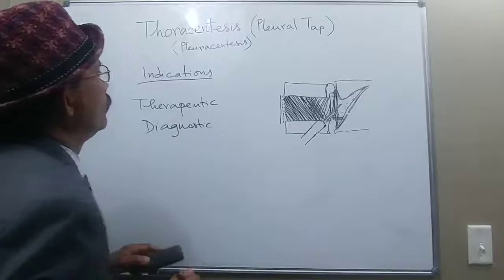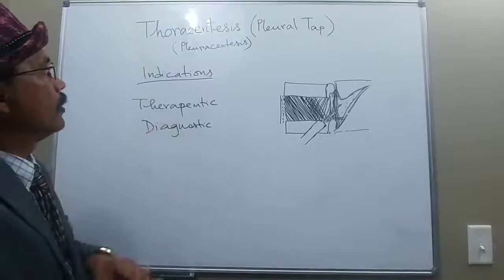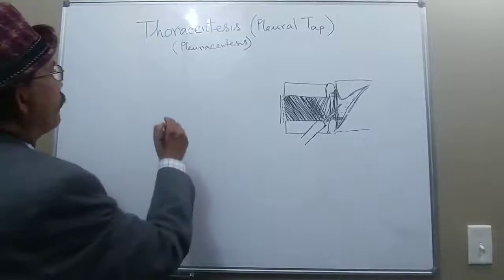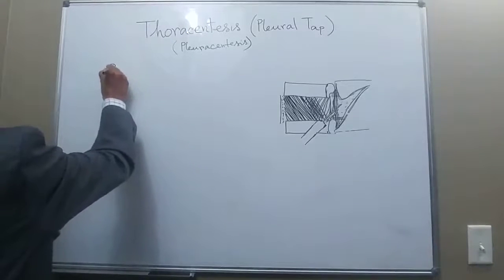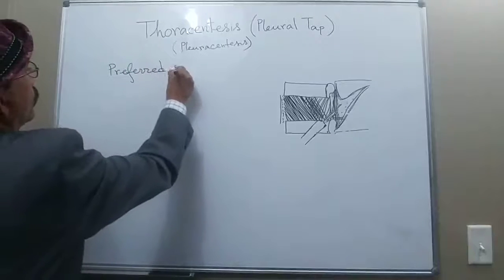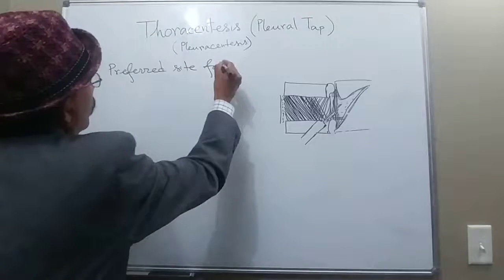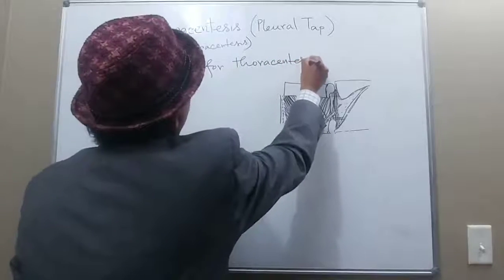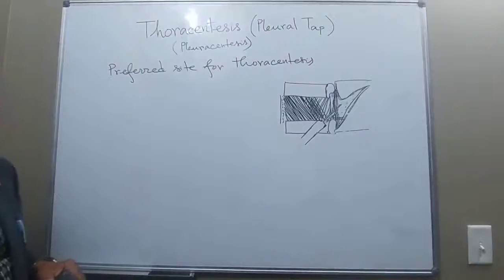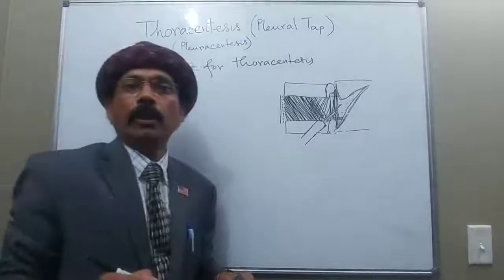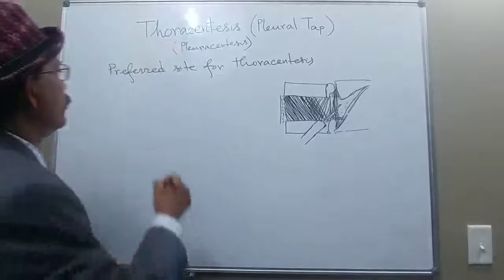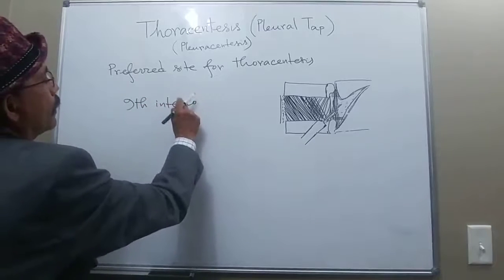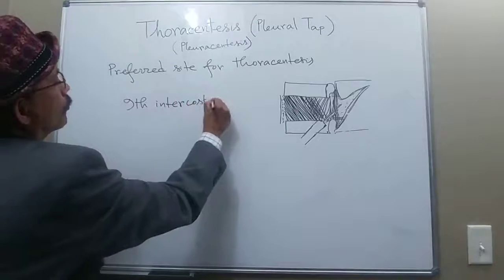Now we discuss the preferred site for thoracentesis. According to Keith Moore's Clinically Oriented Anatomy, the preferred site should be in the ninth intercostal space.